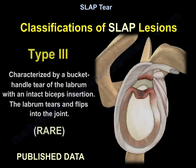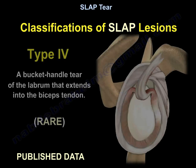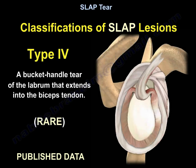Type 3 is characterized by a bucket handle tear of the labrum with an intact biceps insertion. Type 4 is a bucket handle tear of the labrum that extends into the biceps tendon. This condition is rare.